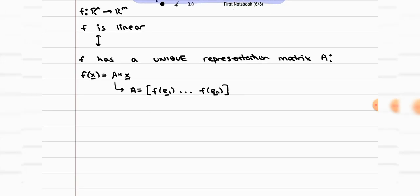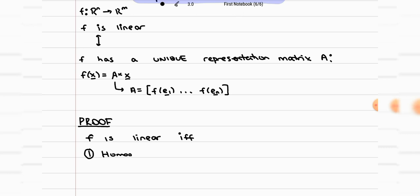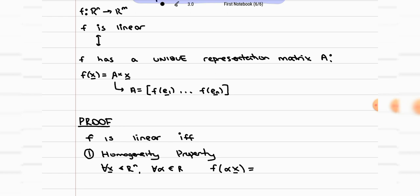For the proof, we have to prove it in both directions, and we're mainly going to be using the definition of a linear function. A linear function satisfies two conditions: the homogeneity and the additivity properties. The homogeneity property says that if you take any vector in Rn and any constant alpha, taking f of alpha x is equivalent to taking alpha times f of x. So for example, f of 2x is equal to 2 times f of x, and this is only true for linear functions.